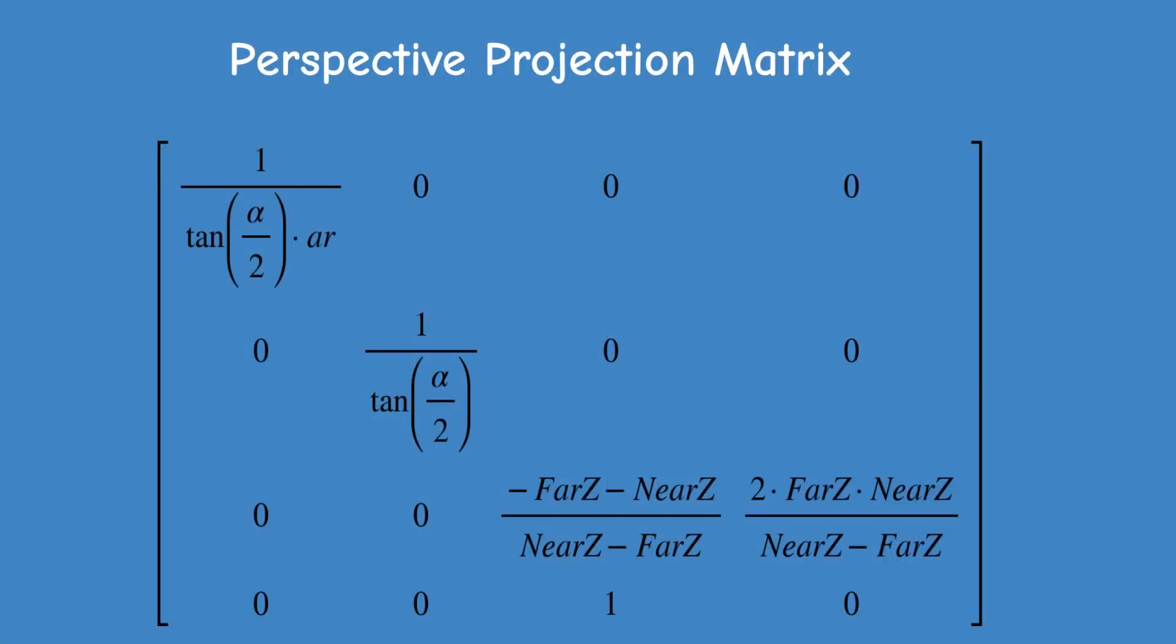I'll just remind you that in order to copy the original Z into the W component, we have the value of 1 in the third column of the fourth row of the perspective projection matrix. You can do the dot product and see for yourself.